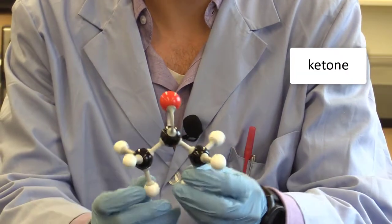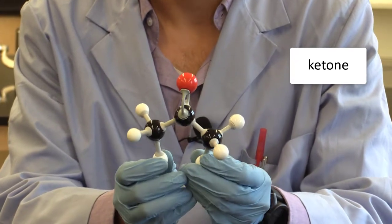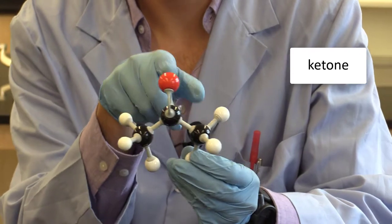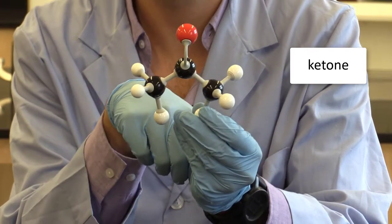This guy here is a ketone. It will always be found in the middle of a structure and what you have is a carbon double bonded to an oxygen and then bonded to a carbon on either side of it.